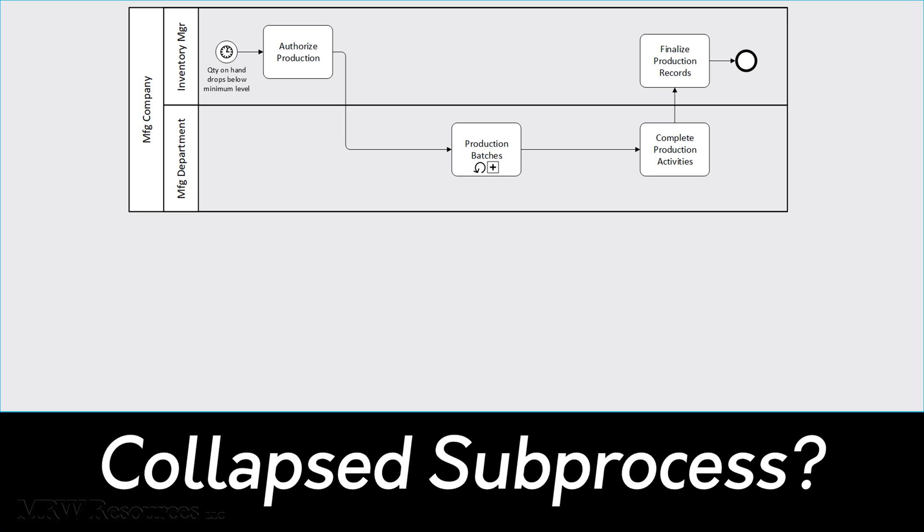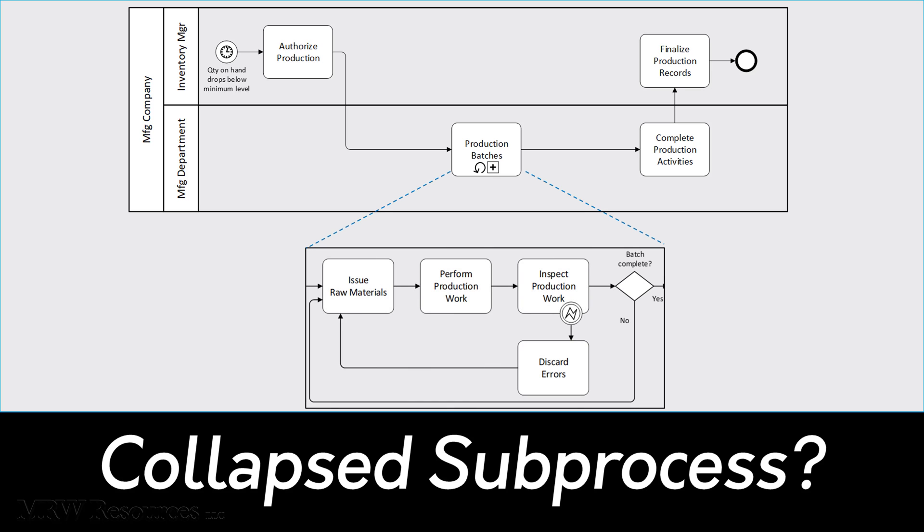If we expand the collapsed subprocess, we can see that it hides the activities, gateways, and sequence flow loops from our earlier diagram.